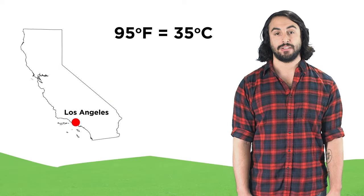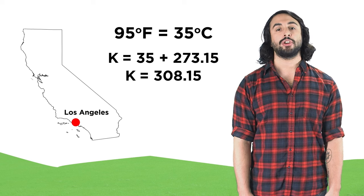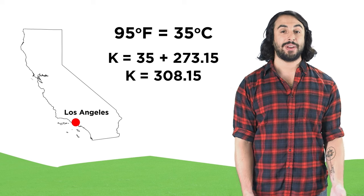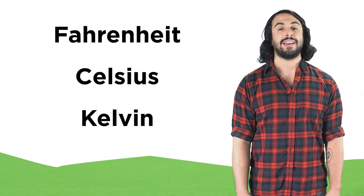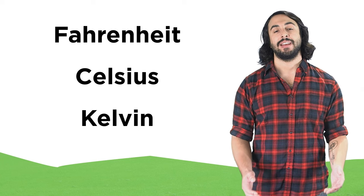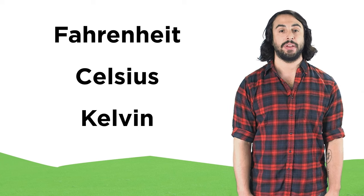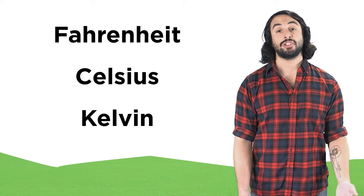So that same hot day in Los Angeles from before, measured in Kelvin, would be around 308. And now we should be able to convert between Fahrenheit, Celsius, and Kelvin temperature scales. Let's check comprehension.